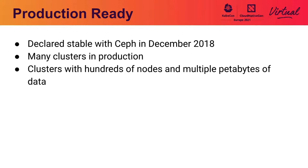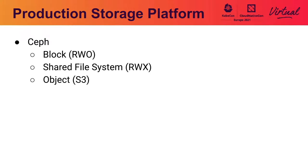There are clusters with hundreds of nodes and many petabytes of data — some large clusters running in production. We don't know about most of the clusters, honestly, because it is an upstream project and people are free to use it without telling us. So what does Ceph provide? Well, there are really three types of storage in a Kubernetes environment. First is block storage, where a pod needs read-write once volumes for databases and so on. Next, shared file systems allow multiple pods to share the same volume — read-write many — which Ceph provides with CephFS. Finally, object storage provides an S3 interface with buckets, gets, and puts. Ceph has all three in one storage platform.